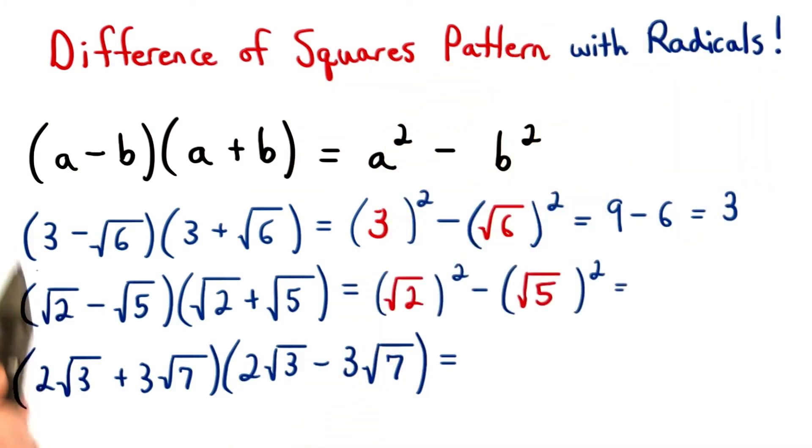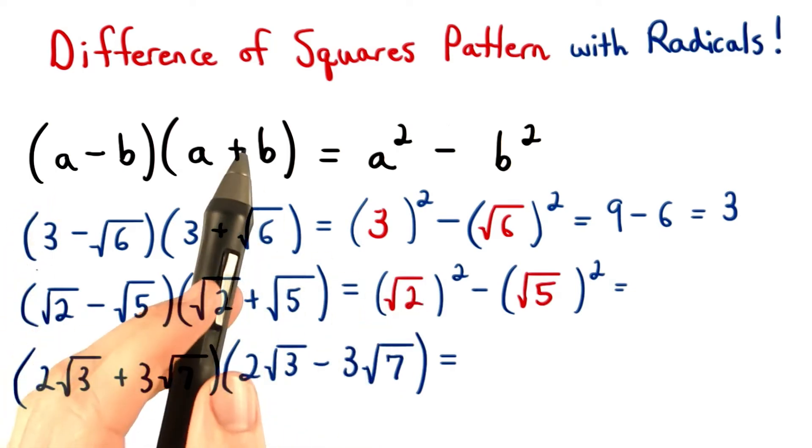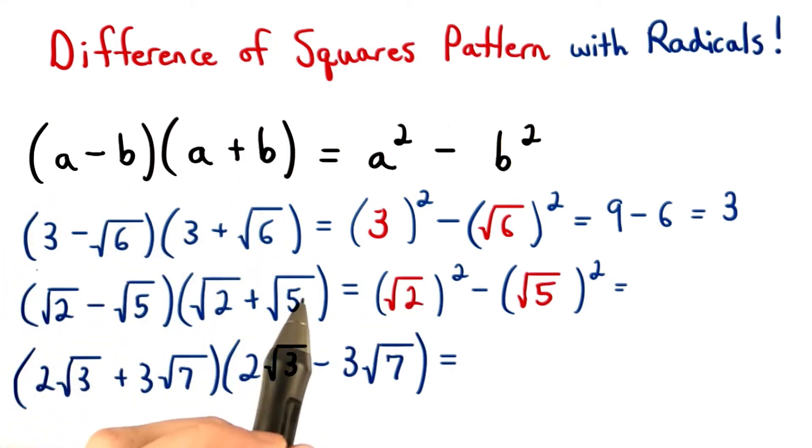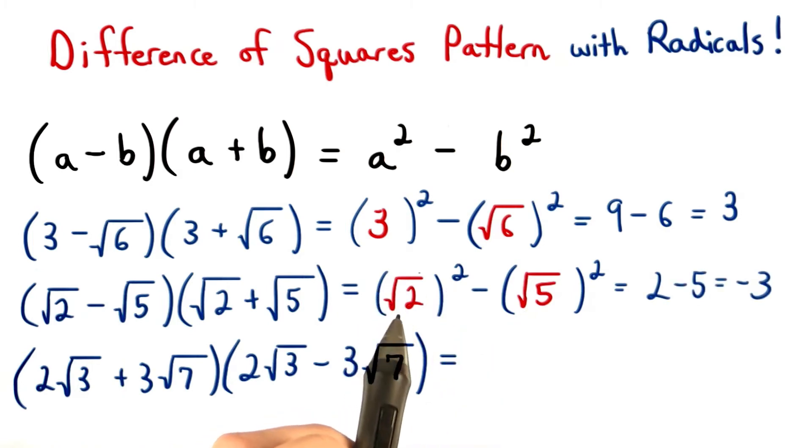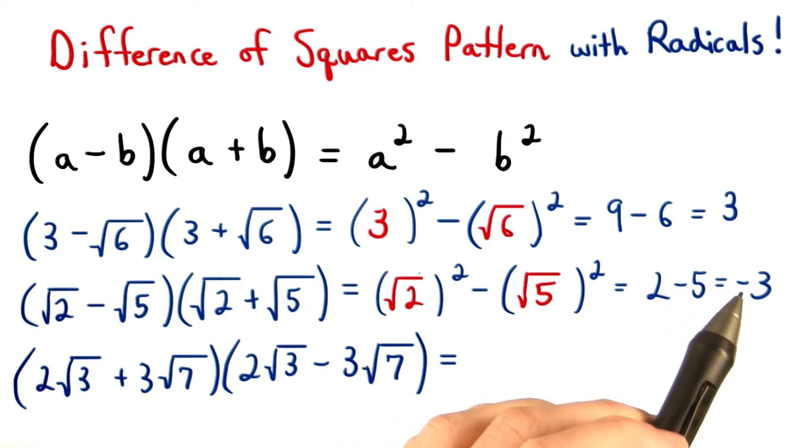For our second problem, the a value equals the square root of 2, and our b value equals the square root of 5. Squaring this square root leaves us with 2, and squaring this square root leaves us with 5. So 2 minus 5 equals negative 3.